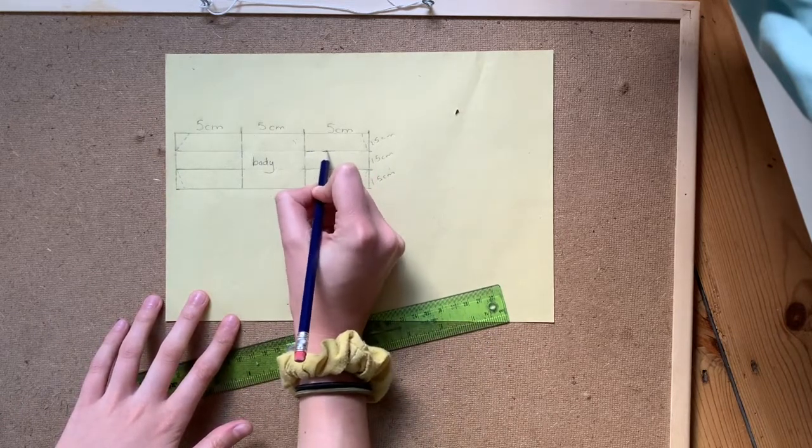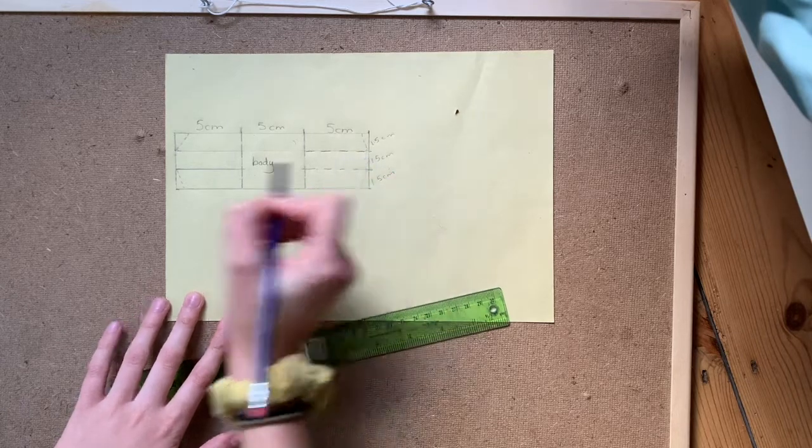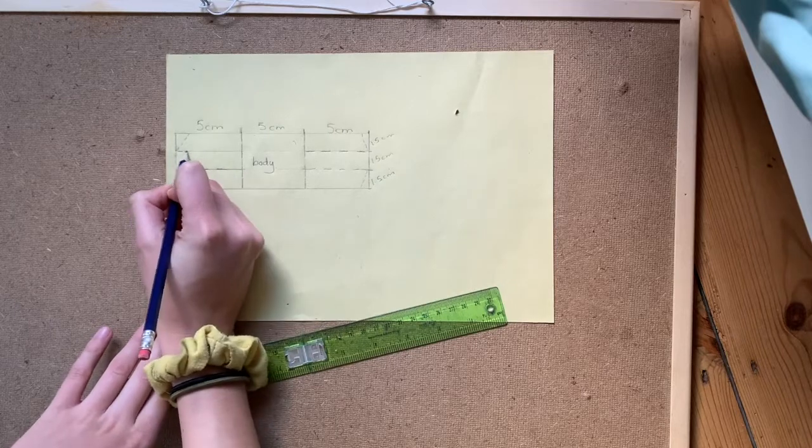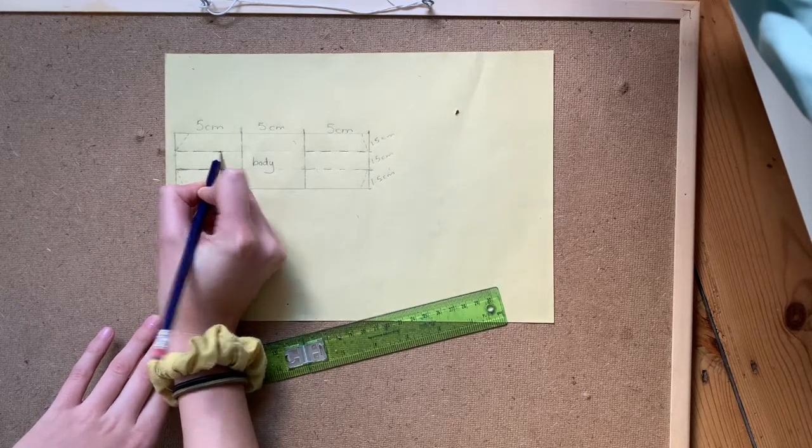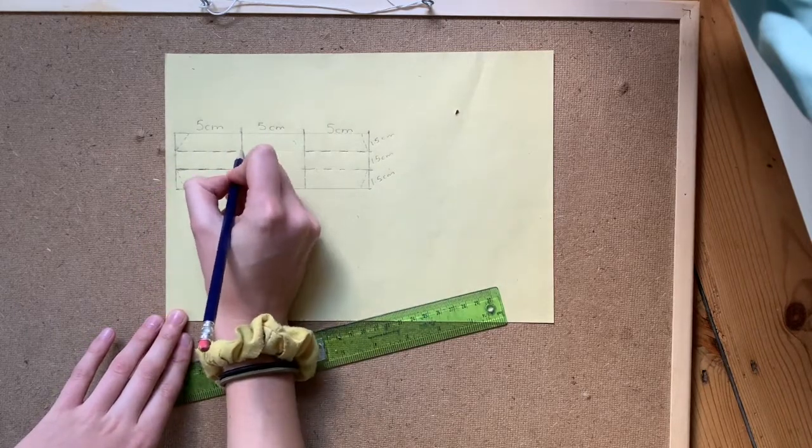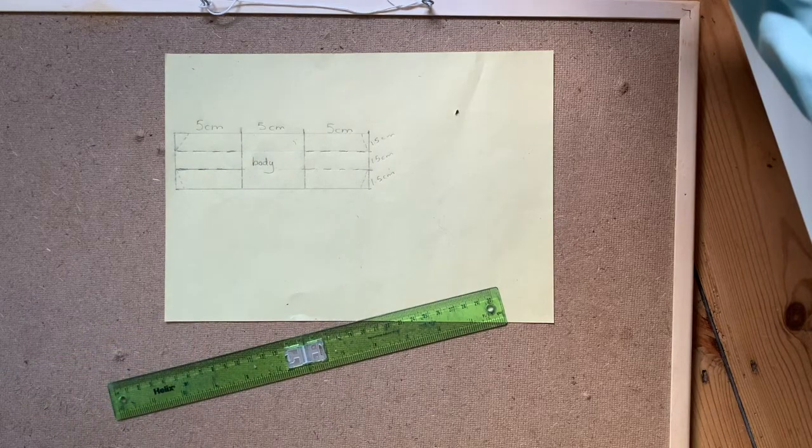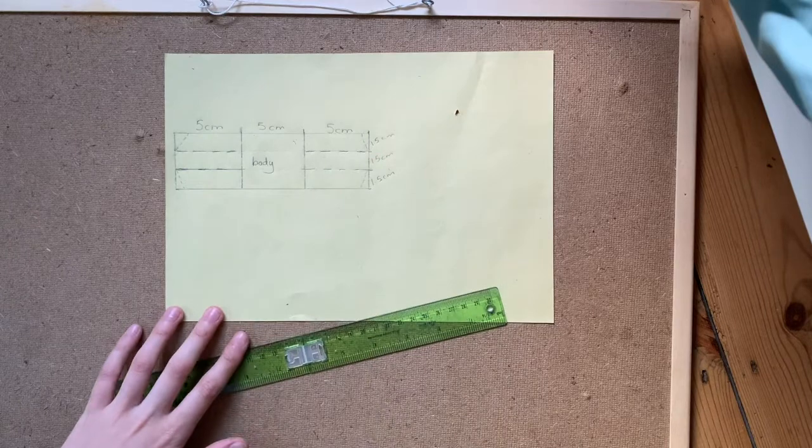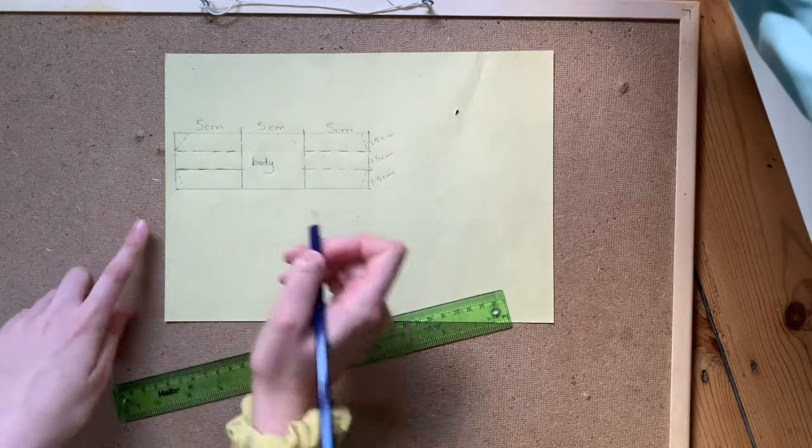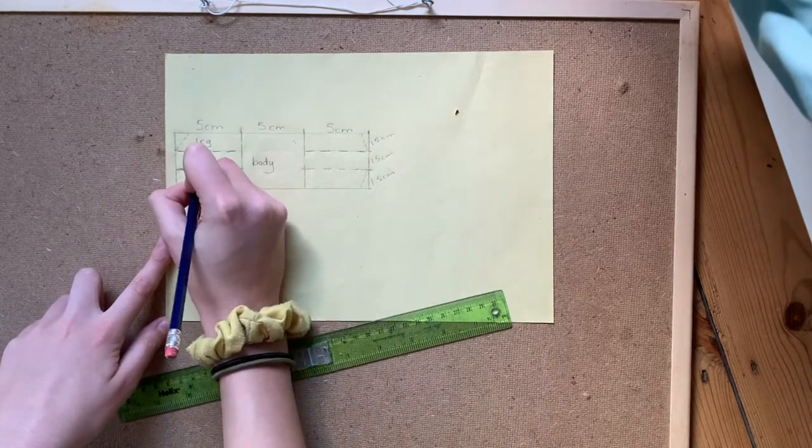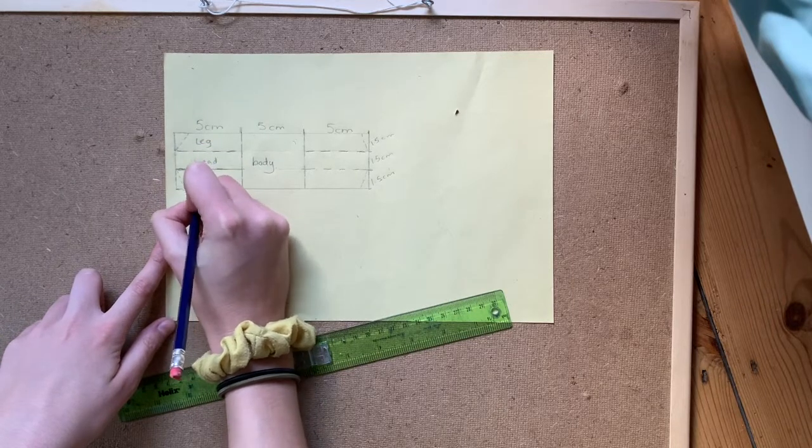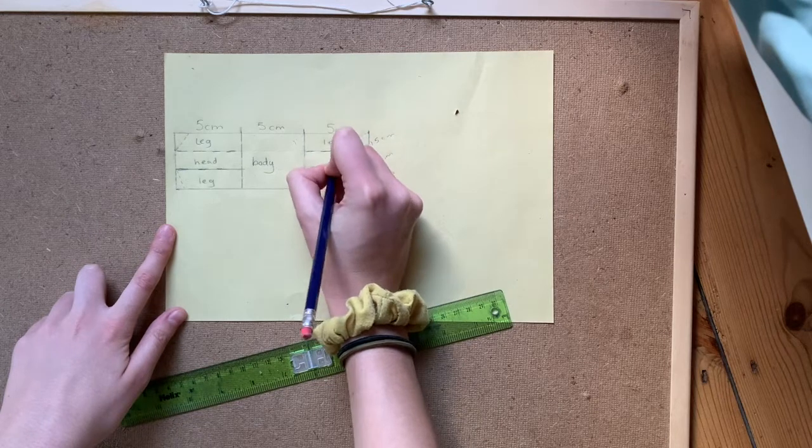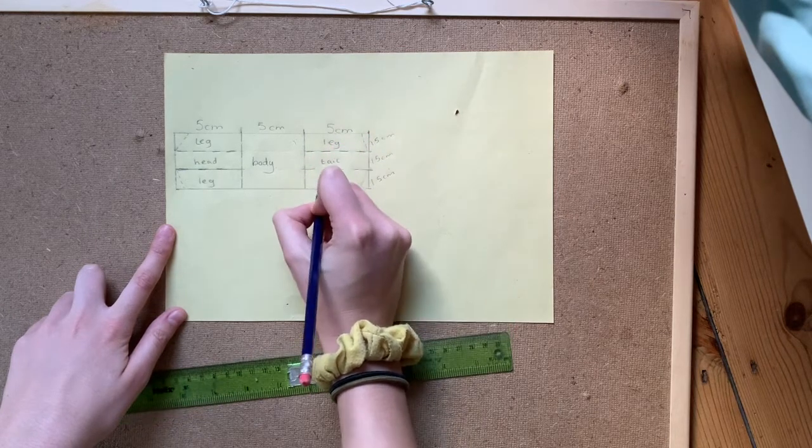Now what I'm going to do is I'm just going to draw a little dotted line going downwards into the corner of each part. These lines here are solid and the edges are solid and I've got dotted lines here. So I've got my body in the middle. On the left hand side I'm going to have leg, head, leg and on the right hand side I'm going to have leg, tail, leg.